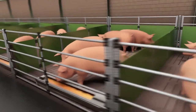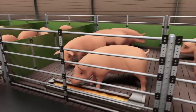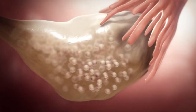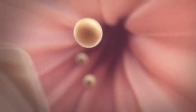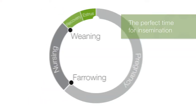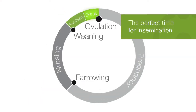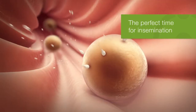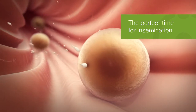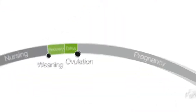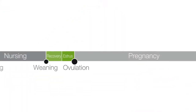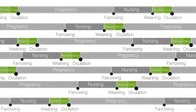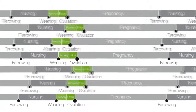One key component of output is the breeding herd. Ovulation occurs towards the end of estrus — this is the perfect time for insemination. You're able to align the reproductive cycles of larger sow batches.